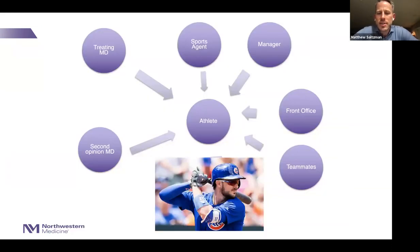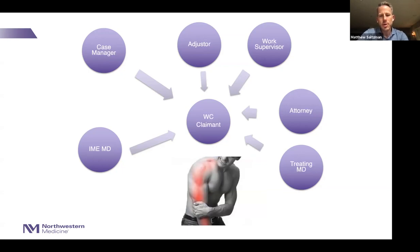The reason I bring this up is because when you think about taking care of an athlete, that athlete has a lot of different people who influence them: teammates, the front office staff, manager, sports agent, the treating doctor, and oftentimes a second opinion doctor. If we think about an injured worker, this is not dissimilar. You have a treating doctor, an attorney that's often involved, a work supervisor trying to get that injured worker back, an adjuster, a case manager, and of course the IME doctor.